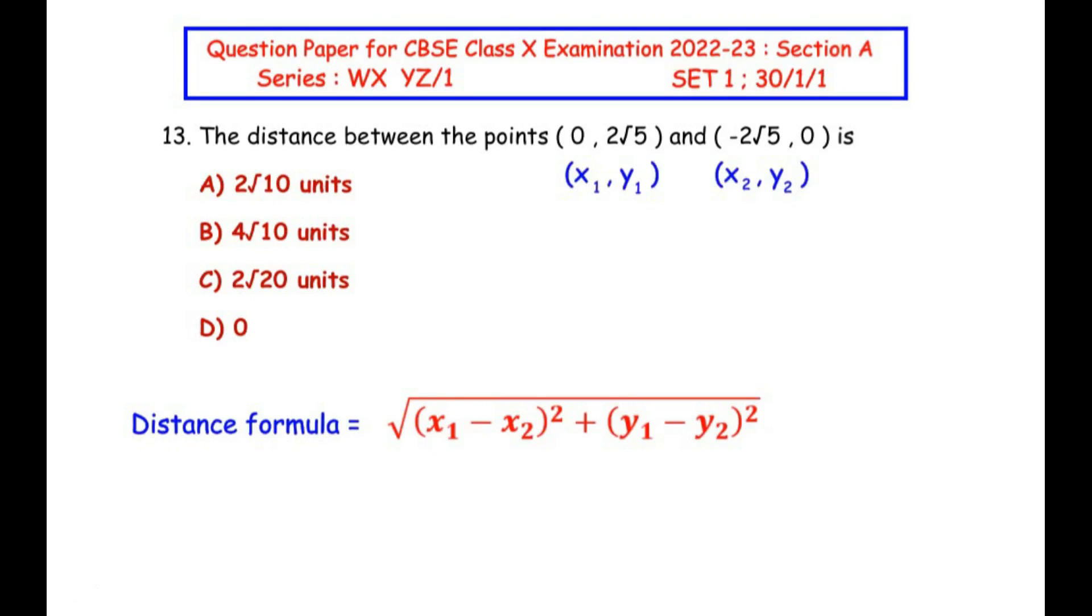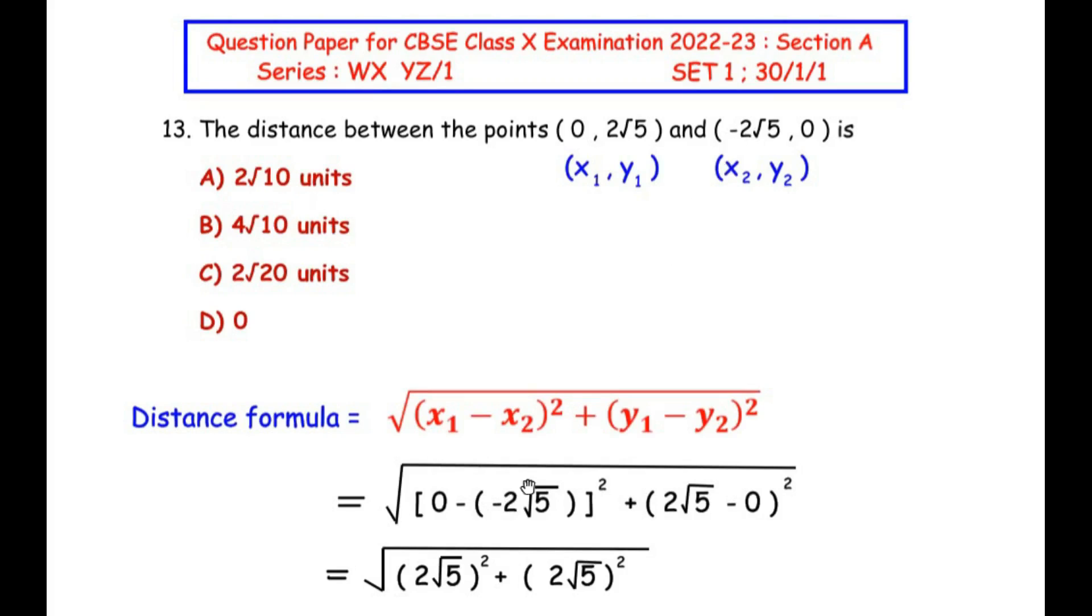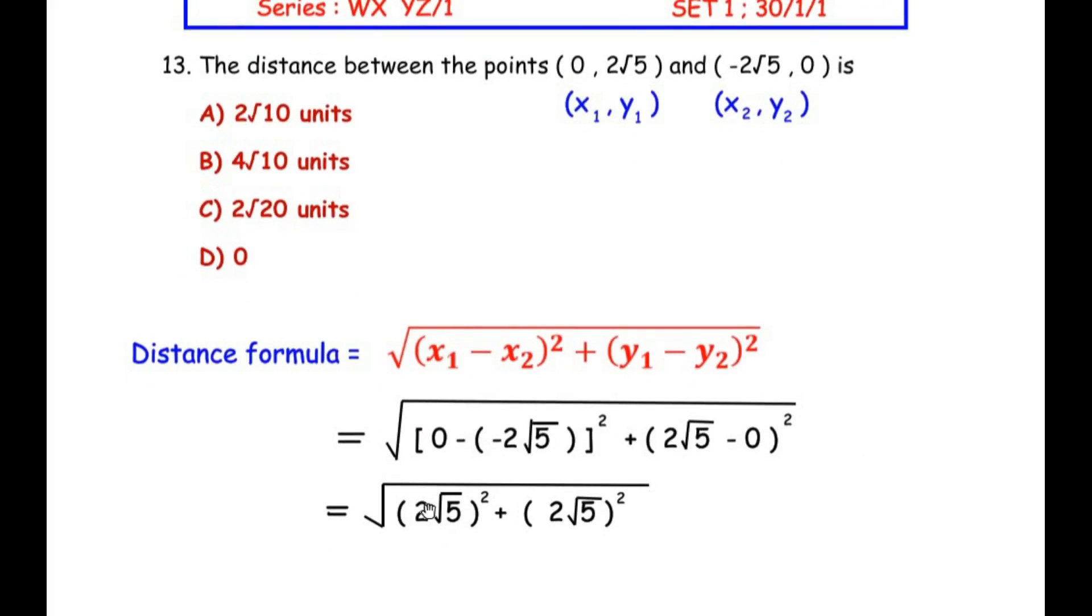So we have √[(0 - (-2√5))² + (2√5 - 0)²]. Now minus of minus we get plus. So (2√5)² + (2√5)².